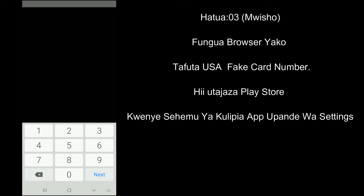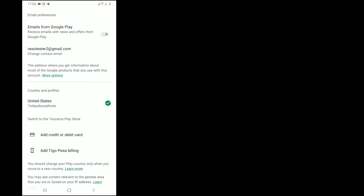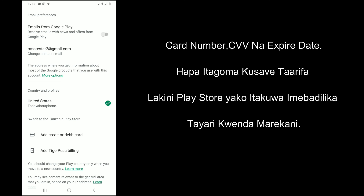Open Settings on Play Store and go to Payment, then paste the card number, CVV, and expiry date. By doing this, the Play Store profile will change the country to USA and you can download your application.